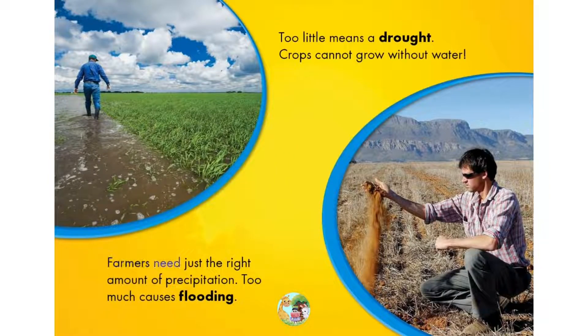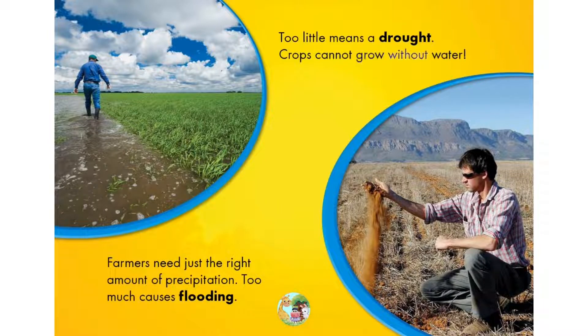Farmers need just the right amount of precipitation. Too much causes flooding. Too little means a drought. Crops cannot grow without water.